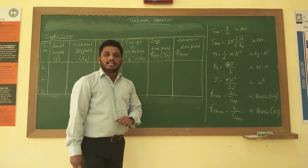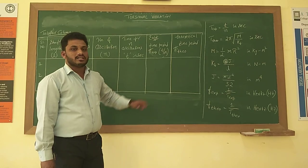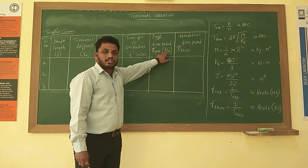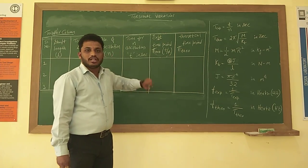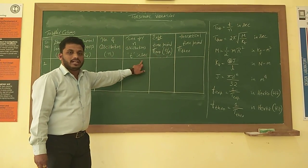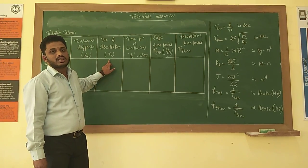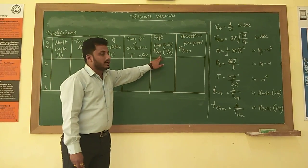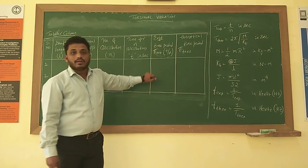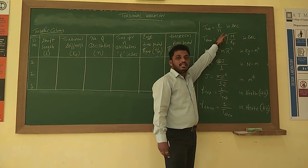Finally, we will be calculating the experimental time period. The experimental time period is the ratio of time taken to complete the oscillations by the number of oscillations n — that is T divided by n. The value of T in seconds divided by number of oscillations, which is 5, gives you the experimental time period T_exp = T/n in seconds.